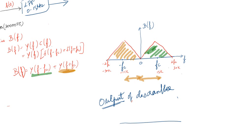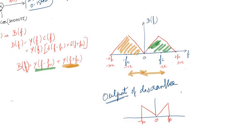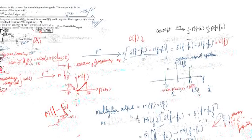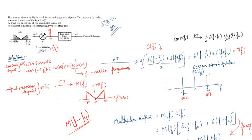The output of the de-scrambler is the recovered message signal m(t), which is similar to the original message signal. This is a very interesting problem. Scrambling is essentially modulation, and de-scrambling is demodulation. Any doubts, please ask in the comment section. Thanks for listening, happy learning!